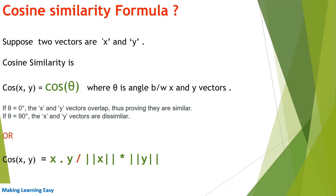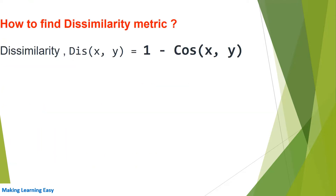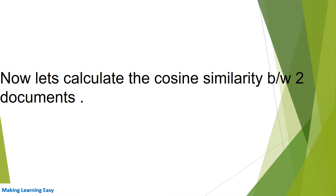In another form, we can write cosine similarity as equal to x dot y, divided by the magnitude of x multiplied by the magnitude of y. To find the dissimilarity metric, you need to write 1 minus cos(x, y), meaning 1 minus the similarity value. Now let's calculate the cosine similarity between two documents.